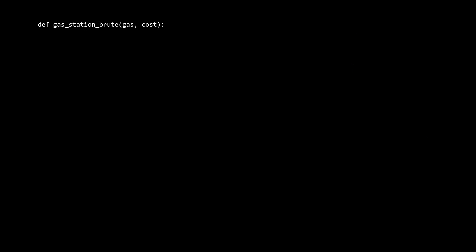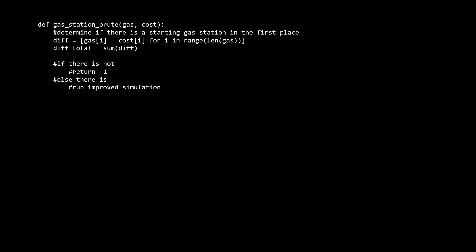We have the same function definition as before. Now, as I mentioned earlier, the first thing we need to do is determine if there will even be a valid starting gas station. If there isn't, we can just return negative one. But if there is, we run our improved simulation. So how do we check if there is a valid starting gas station? What we can do is we can calculate the deficits and surpluses of gas at each gas station. I'll call this array diff for difference. Now we sum up all the surpluses and deficits. And if the total is negative, it means there is a net deficit, so we won't be able to find a starting gas station. So if that's the case, we just return negative one. Otherwise, we run our improved solution.